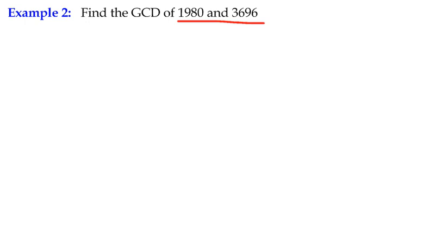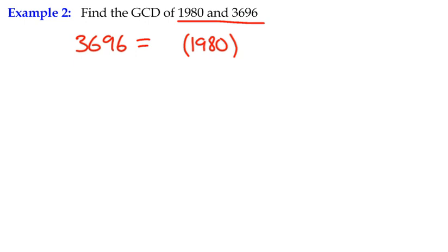The way we do it is we start off with the larger of the two numbers and divide 3,696 by the smaller one, 1,980. We find how many times 1,980 goes into 3,696 — the answer being 1 — and that gives a remainder of 1,716. So that's our first application of the division algorithm.